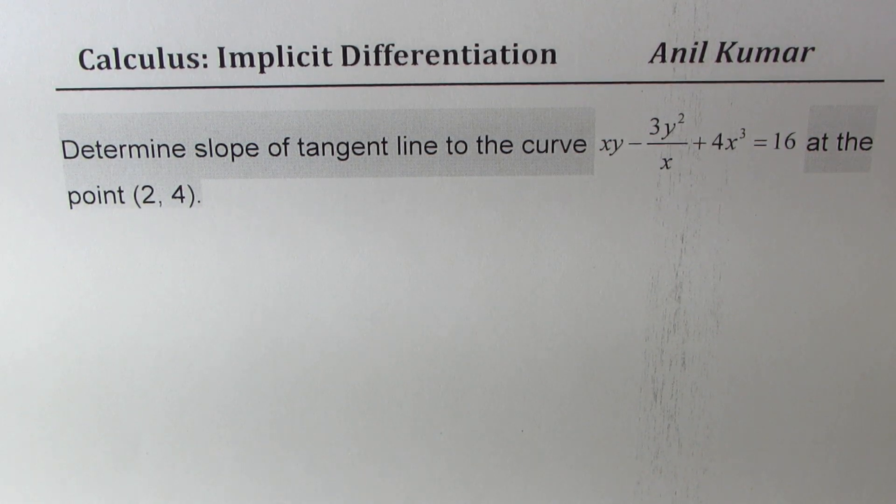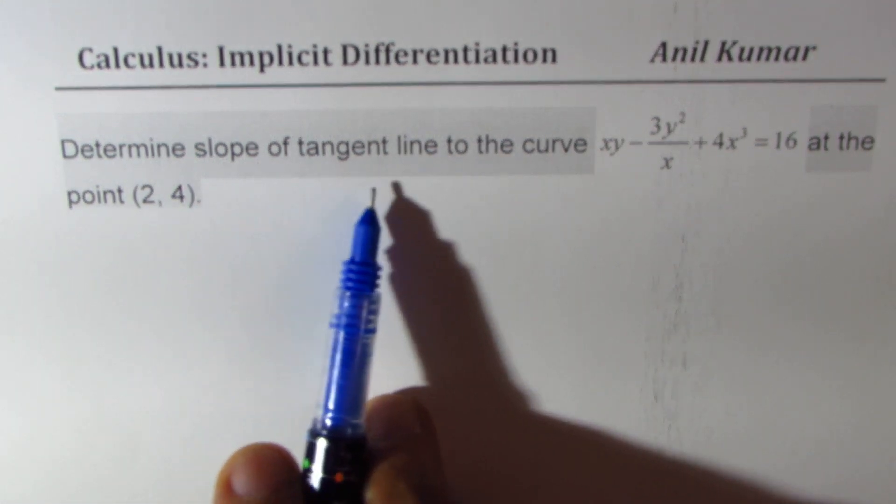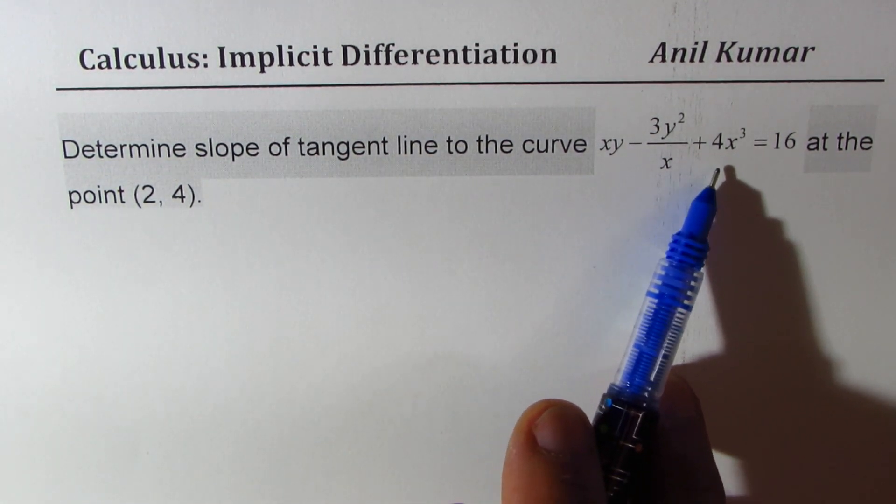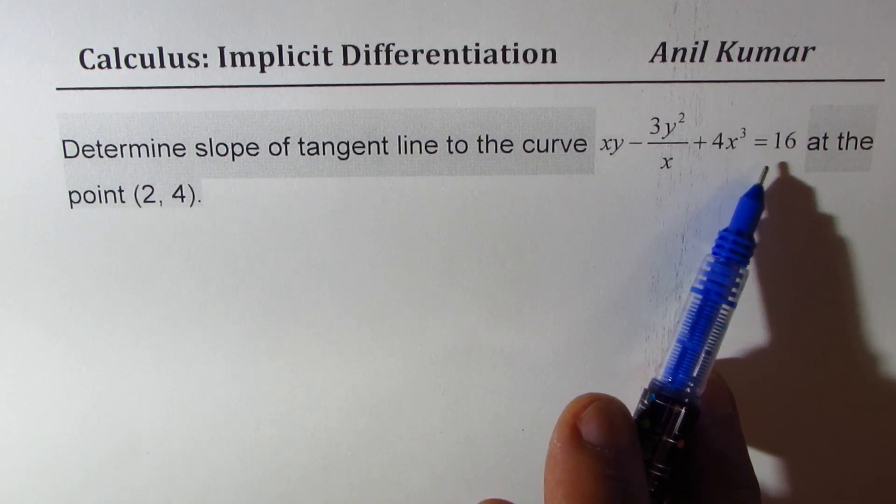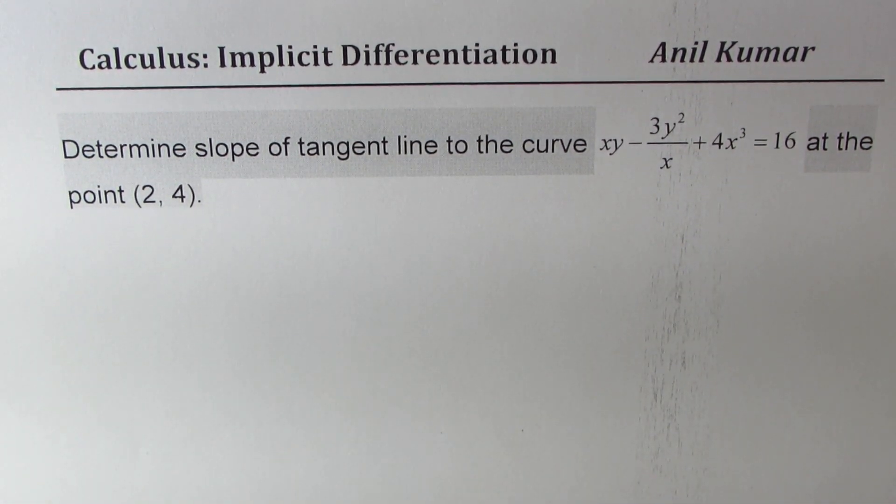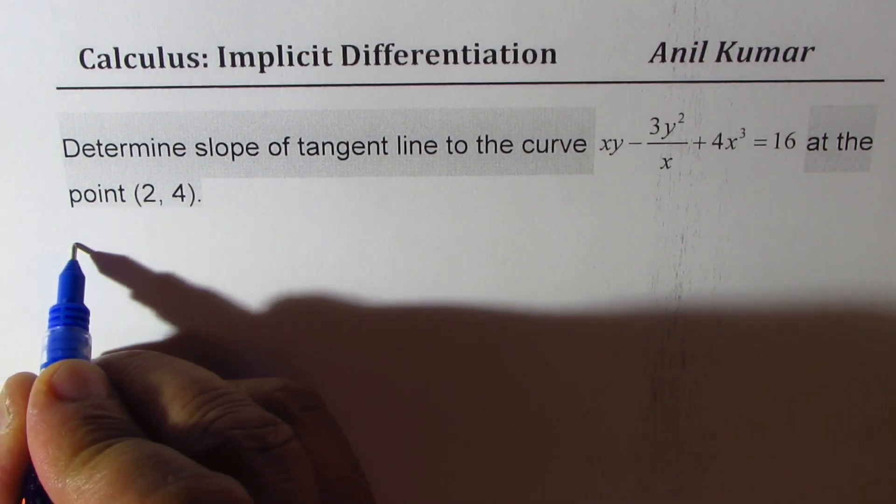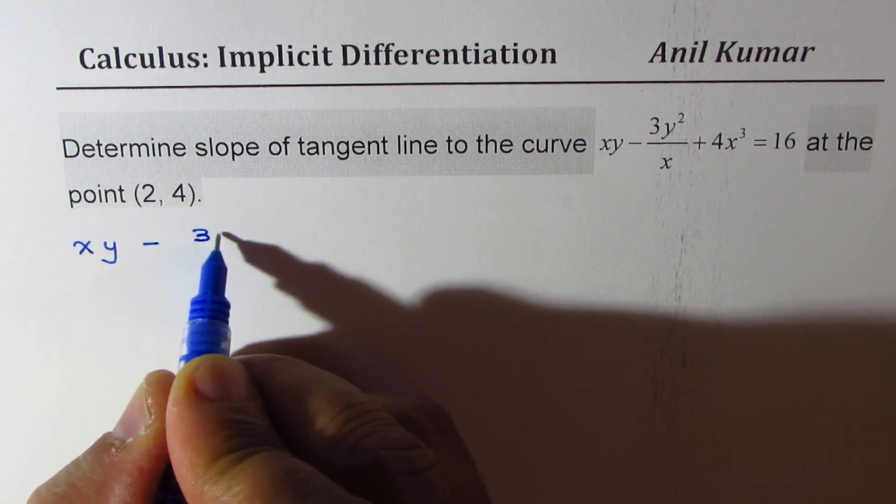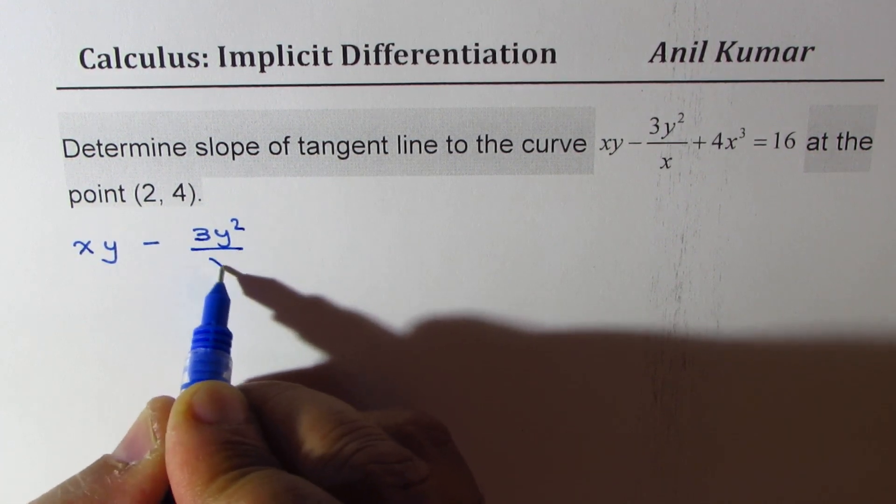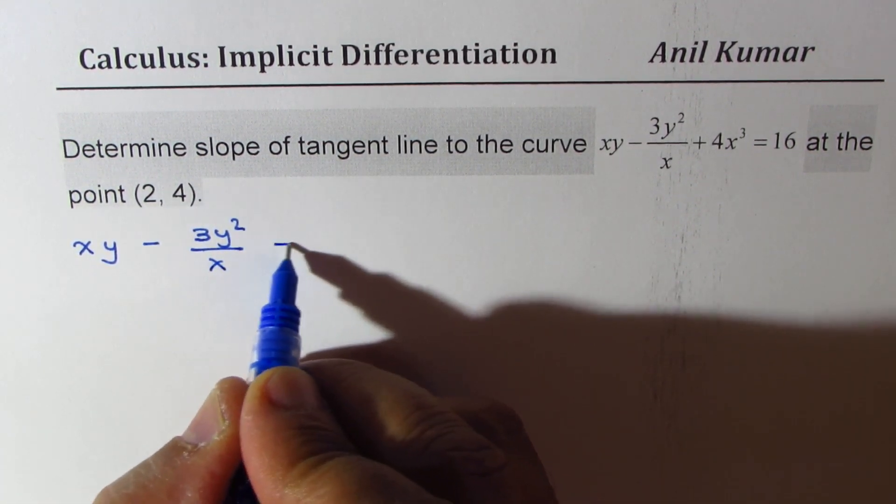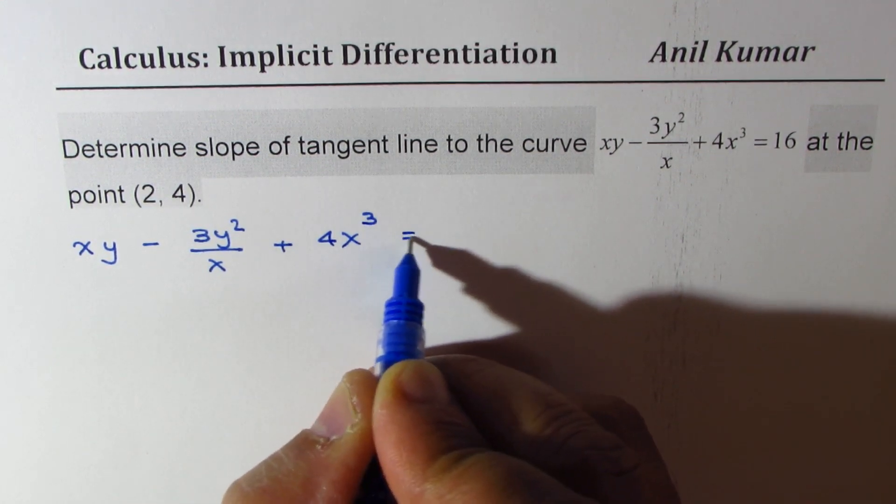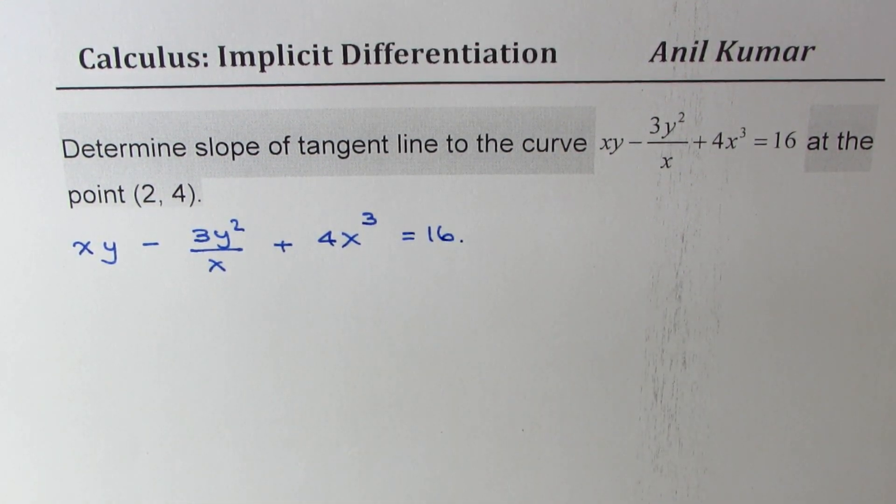We will apply implicit differentiation to find the slope of the tangent line to the curve xy minus 3y square over x plus 4x cube equals 16 at the point (2, 4). Let's rewrite the equation: xy minus 3y square over x plus 4x cube equals 16.